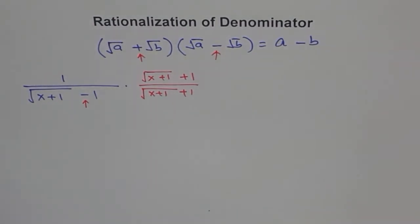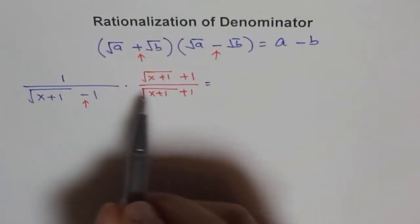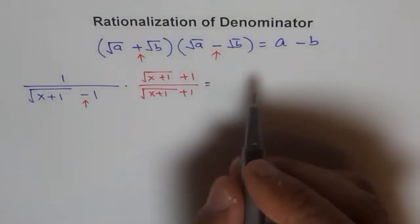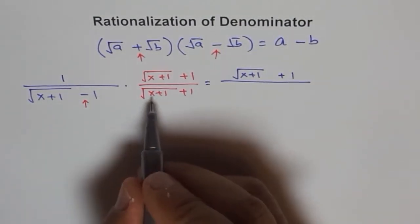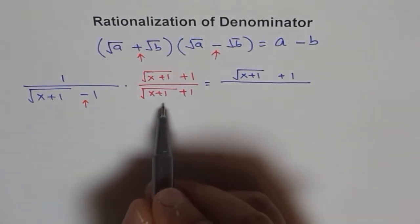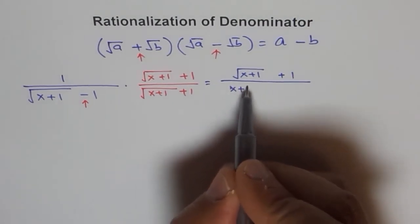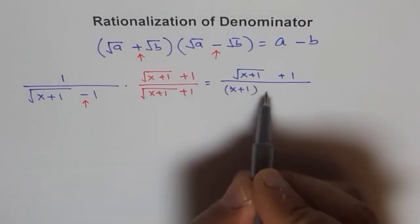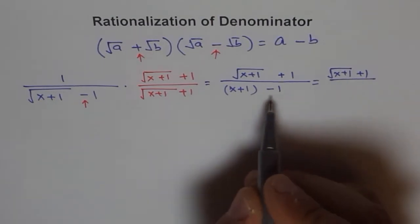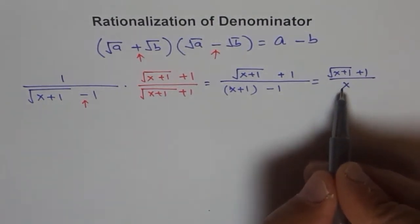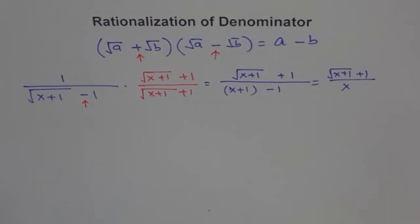When you carry out this multiplication, in the numerator you get square root of x plus 1, plus 1. In the denominator you get a squared minus b squared: the square of square root of x plus 1 is x plus 1, minus 1. So you have x plus 1 minus 1, which equals x. The radical has been eliminated from the denominator — and that is a huge thing.